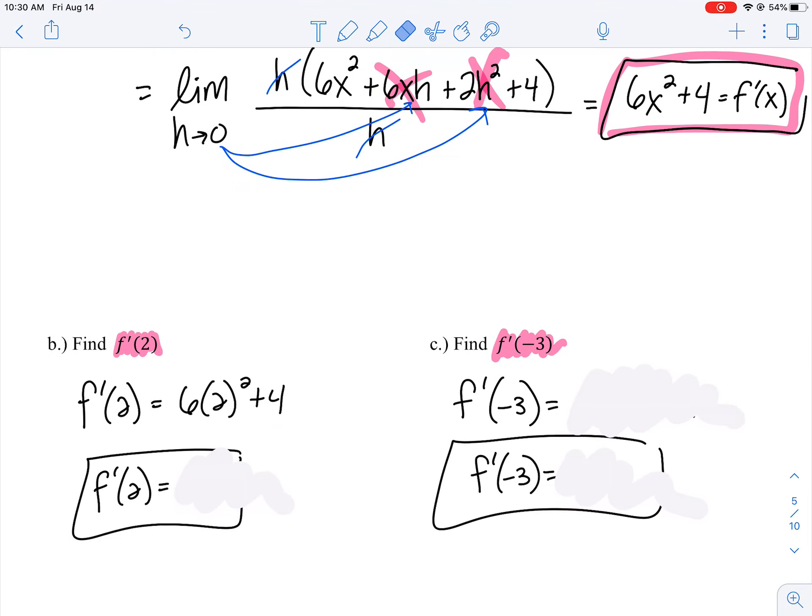When I do that, I get 6(2)² + 4 = 28. When I substitute in -3, I get 58.